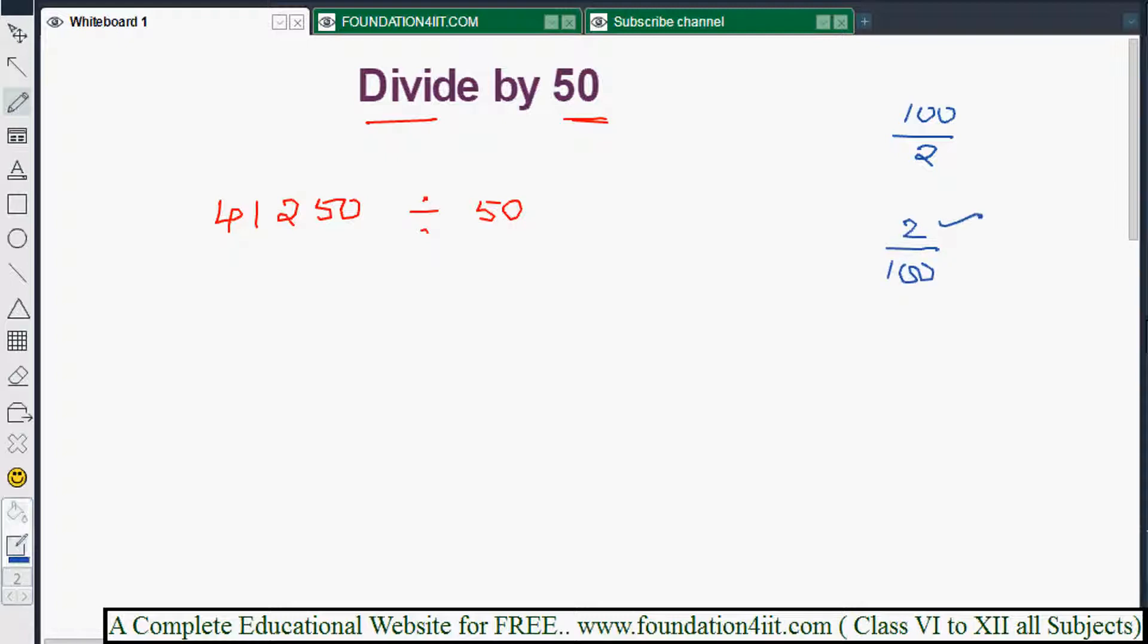That means this number is given. If you multiply it by 2, now we'll get the answer. 0 by 2 is 0, 5 by 2 is 10, 4 is 8, 2 and 2 is 4, and 2 by 4 is 8. So you'll get 82,500.